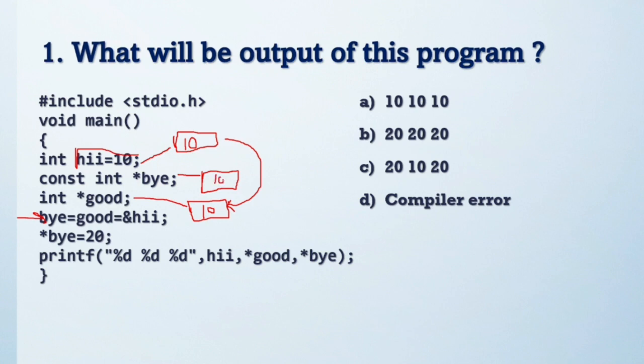Then after, bye equals good, so bye also indicates 10. This is the main point here: constant integer. After this assignment, this line again assigns with 20 value here.